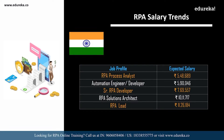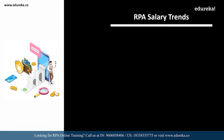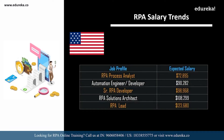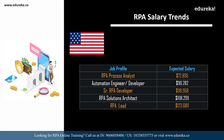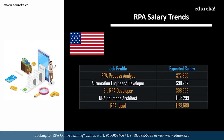In the USA, an RPA developer can expect around $92,000 per year. An RPA process analyst can expect around $72,000; an automation engineer or developer around $90,000; a senior RPA developer around $98,000; an RPA solutions architect around $1,00,000; and an RPA lead around $1,23,000 dollars. This is the right time to start your career in RPA.